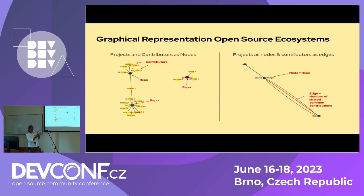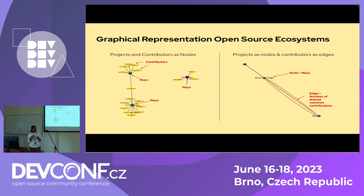This is how we represent it from a graphical standpoint. In response to a question: we represent the number of shared contributions as the weight of the edge, and also as the length. If you see a larger distance, there are fewer contributions between those projects. If they're closer together, the weight of contributions is higher. That's how the representation works.